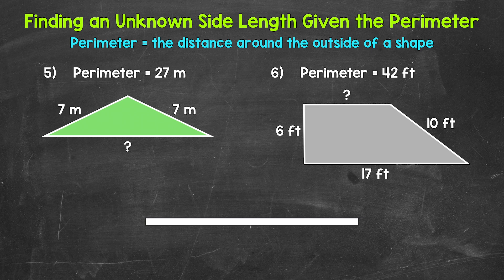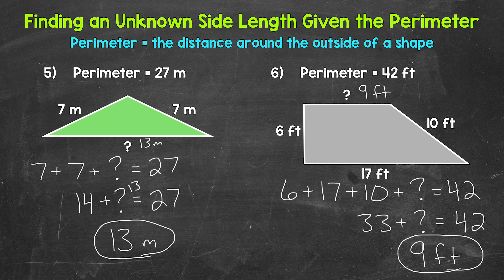Let's check your answers — if you need more time, press pause and continue working. For number five, the missing side length is 13 meters. For number six, the missing side length is 9 feet. Remember, it doesn't matter what order we add the side lengths in, as long as all of the side lengths are included, we will get the correct perimeter. So if your work looks a little different than mine but you still got the same side lengths, you are correct.